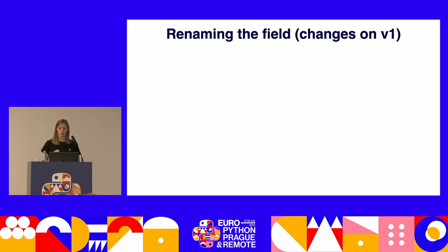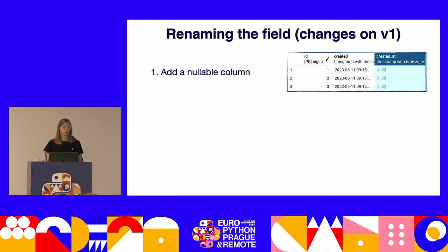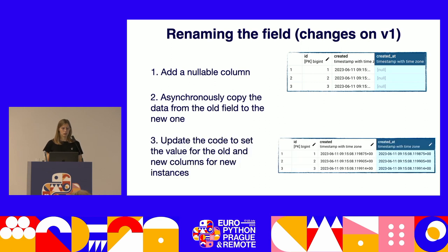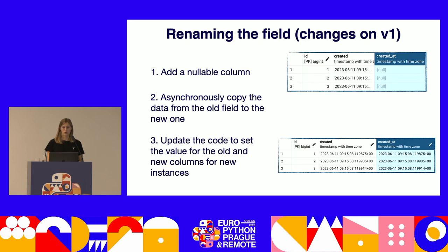The changes on version V1 are almost the same as for adding a unique slug field. First, add a new nullable created_at column on the product table. In the next step, copy data from the old column to the new one to update existing instances — as before, we delegate this to an asynchronous task running in the background. We also update the code so that any new instances created on V1 will have the proper value set for both the old and new columns. After finishing the migrations and the asynchronous task, we are ready to apply the changes on version V2.